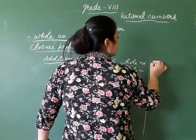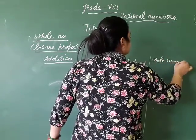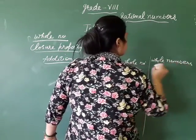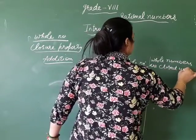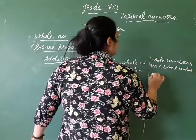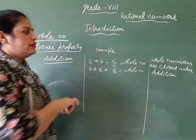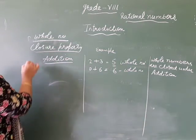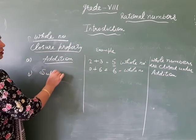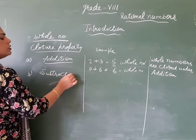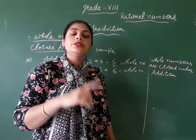Whole numbers are closed under addition. Now next is subtraction. Let's check — when we subtract whole numbers, is the difference also a whole number?